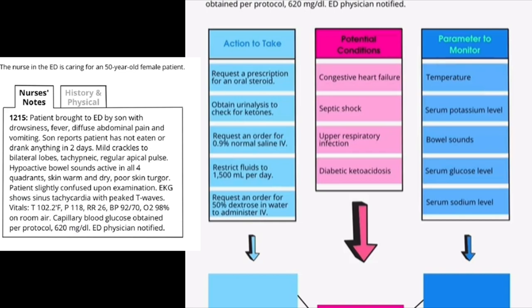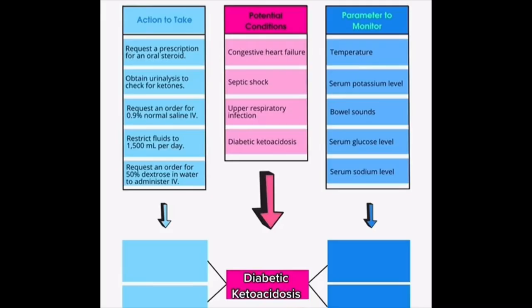Does this patient have an upper respiratory infection? The patient is febrile with mild crackles, so this is also a possibility. Finally, does this patient have any signs of diabetic ketoacidosis or DKA? The patient has a fever, diffuse abdominal pain, vomiting, warm and dry skin, poor skin turgor, and is slightly confused. The EKG shows peaked T-waves, which is seen in DKA, they are tachypneic, and the blood glucose is 620. We can conclude that this patient is most likely presenting with diabetic ketoacidosis.